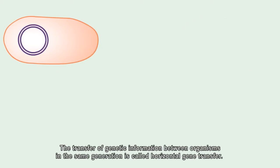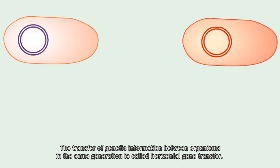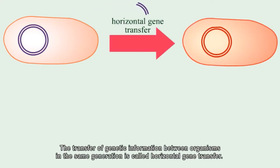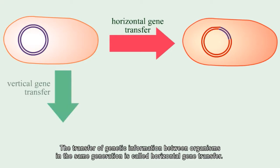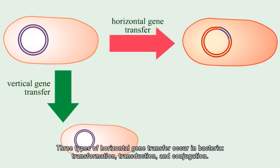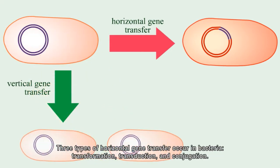The transfer of genetic information between organisms in the same generation is called horizontal gene transfer. Three types of horizontal gene transfer occur in bacteria: transformation, transduction, and conjugation.